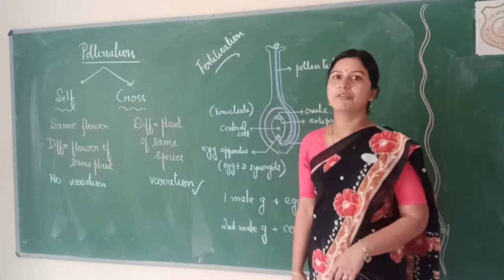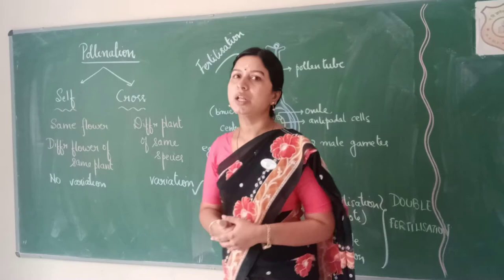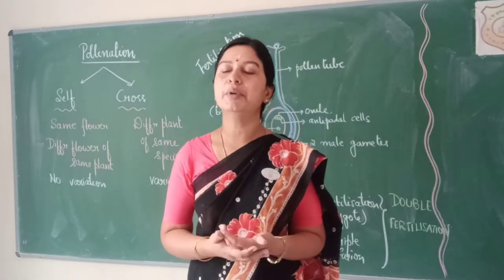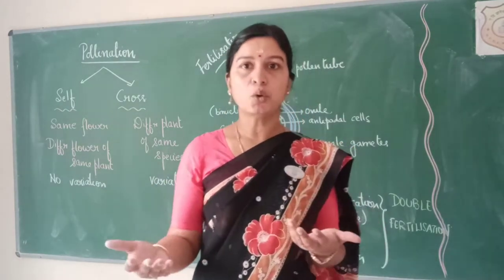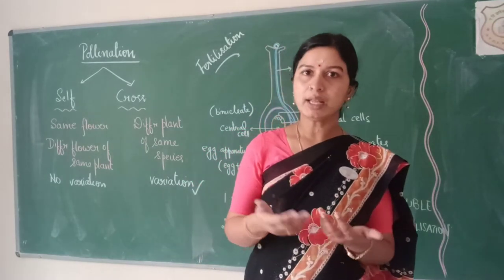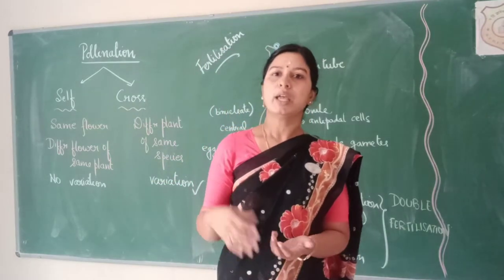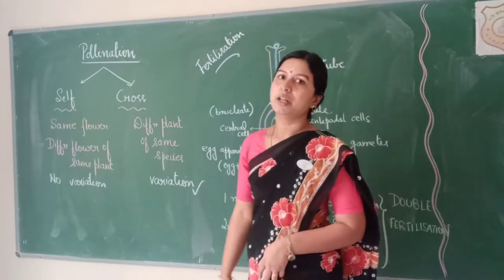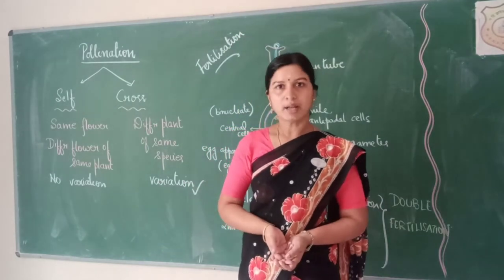Whereas there are chances of variation when cross-pollination occurs. Cross-pollination happens through various agencies — it can happen through air or wind, through water, or through other organisms like birds and insects. In case of self-pollination, it is not dependent on those external agencies, whereas cross-pollination depends on external agencies like wind, water, and other organisms.